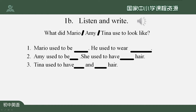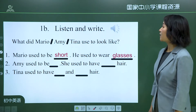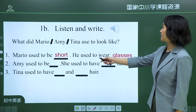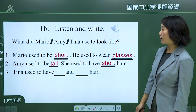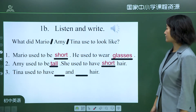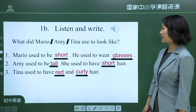Conversation 3 — Tina: 'Hiya Bob.' 'Hi Tina. You've changed too.' 'Oh yeah?' 'You have blonde hair.' 'Yeah, it used to be red, didn't it?' 'And it's straight.' 'Yeah, it used to be curly.' Now let's check the answers: Mario used to be short and used to wear glasses. Amy used to be tall and used to have short hair. Tina used to have red and curly hair.